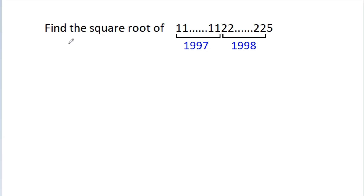In this video, we have to find the square root of 1,1,1...1 (1997 digits) times 2,2,2,2...2 (1998 digits) times 5.